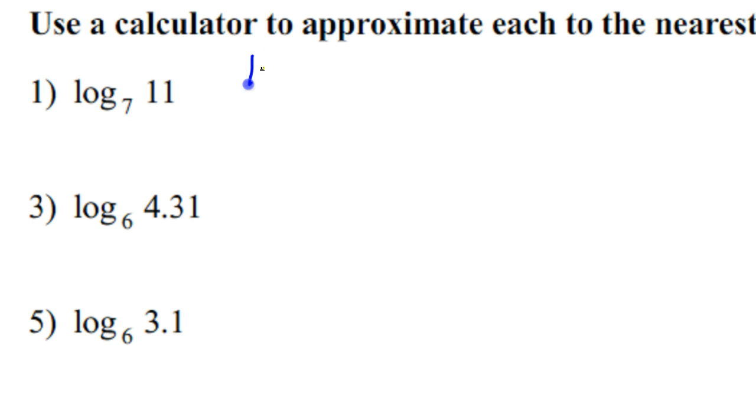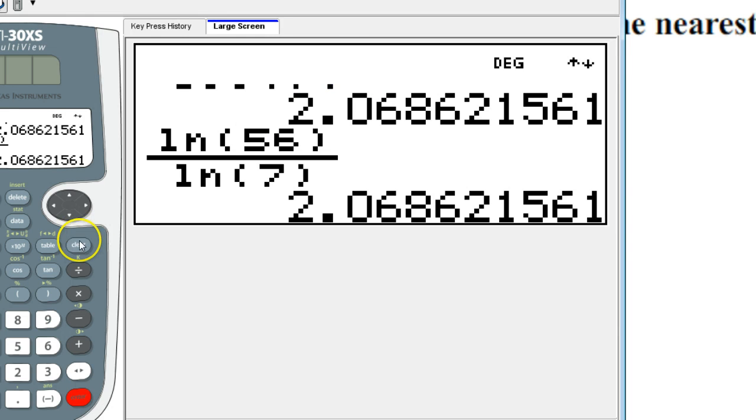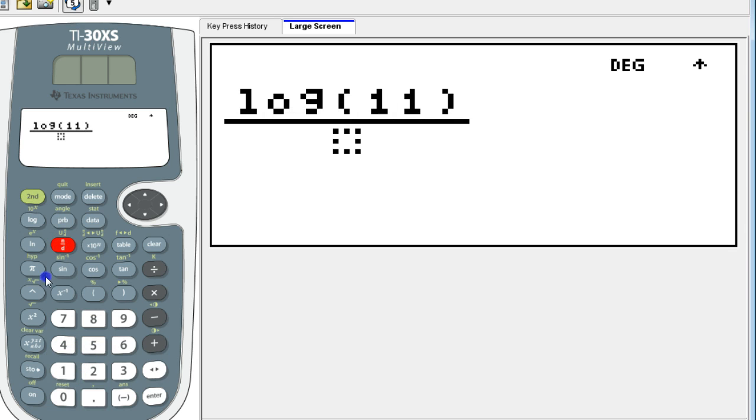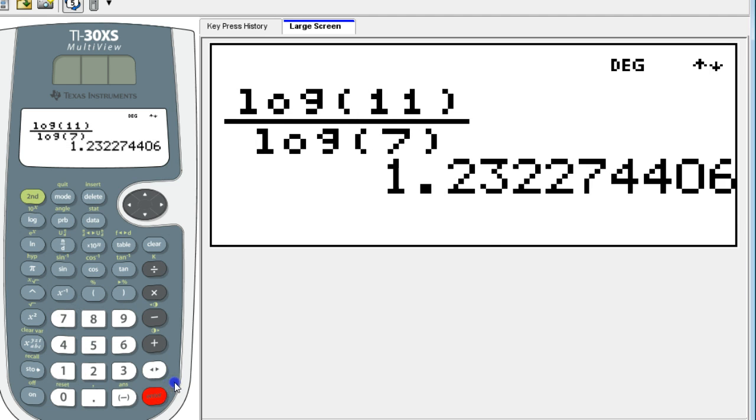this is going to be the same thing as log 11 over log 7. So I can simply put that in my calculator. Okay, so that's log 11 over log 7. All right, so that's going to be the answer.